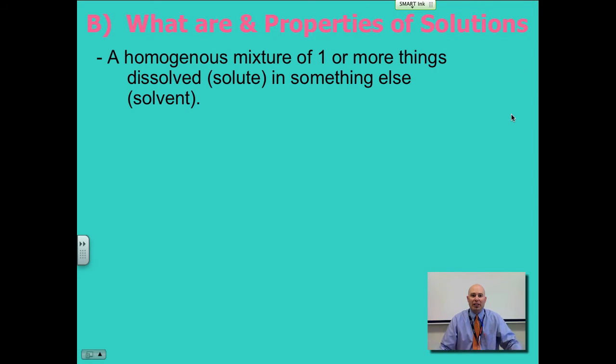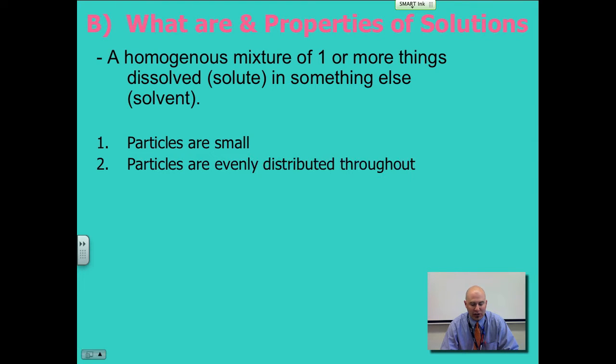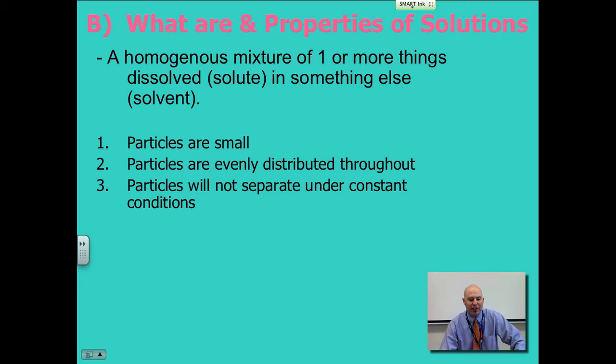So, properties of solutions. A solution is a homogeneous mixture of one or more things dissolved, the solute, in something else, the solvent. Some properties: the particles are very small. Again, usually they are dissolved where you can't see them—they're homogeneous. They are interchanged throughout the entire mixture. They're evenly distributed throughout and they will not separate under constant conditions. We know that some solutions, if you leave them out without a cover, say you have some salt water and you leave that open to the atmosphere and let it evaporate, you'll see some salt on the bottom of your beaker. It's separated into the gaseous water molecules as they evaporate and the salt on the bottom. But under constant conditions in your enclosed container, they won't separate.